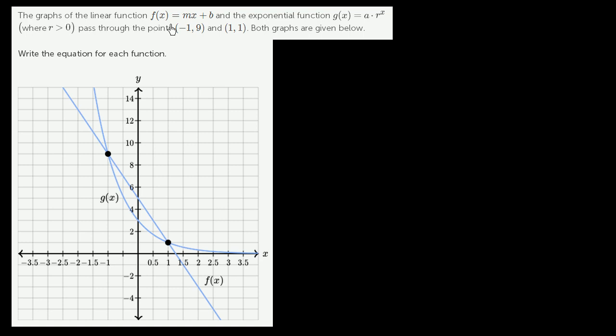The graphs of the linear function f(x) = mx + b and the exponential function g(x) = a times r to the x, where r is greater than 0, pass through the points (-1, 9), so this is (-1, 9) right over here, and (1, 1). Both graphs are given below.